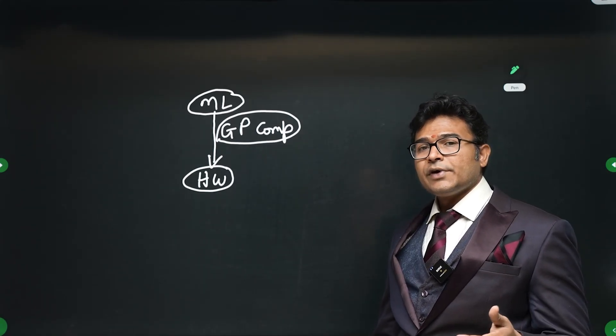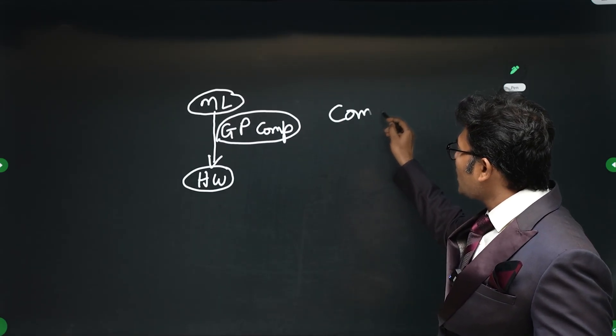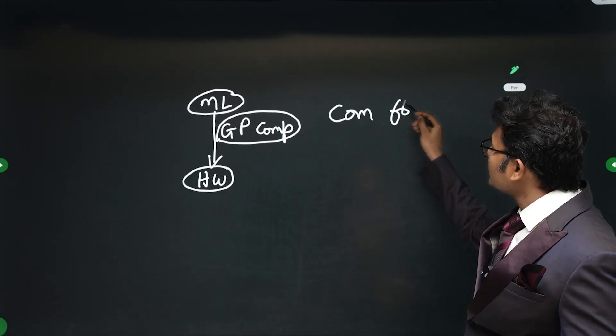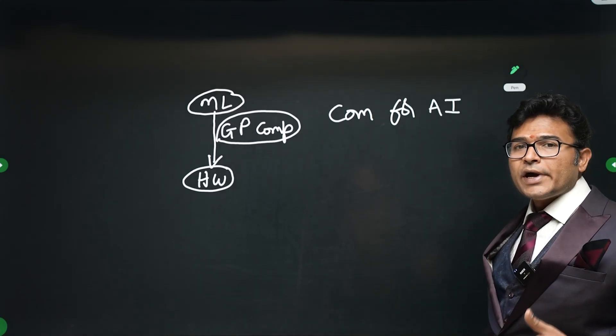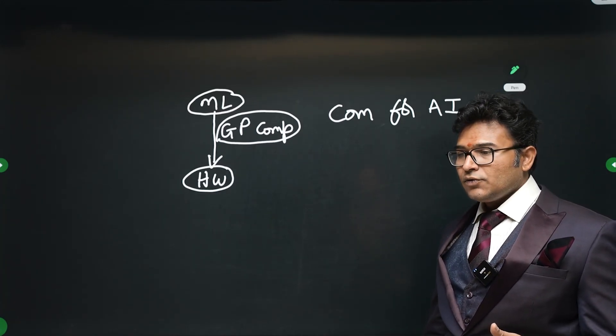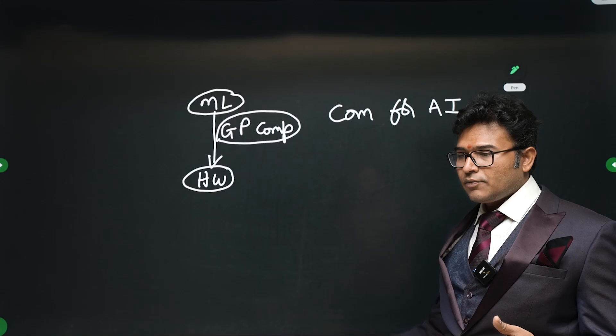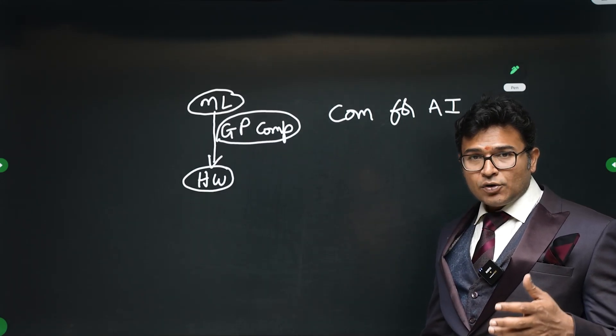This is a very good area. What is the area I'm talking about? Compilers for AI. What kind of knowledge you should have in order to do research in this area? Even if you are having a B.Tech and if you have done some work in this area, you will be getting crores. Your starting salary will be in crores.